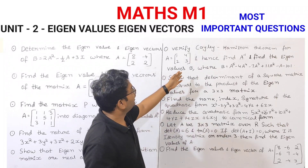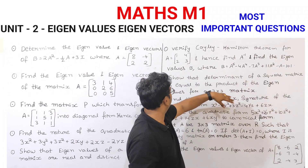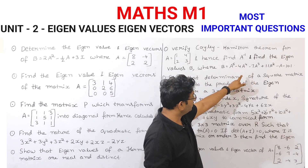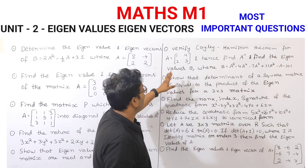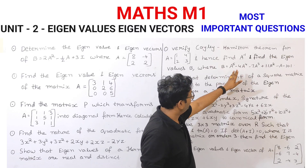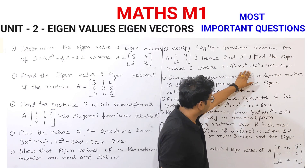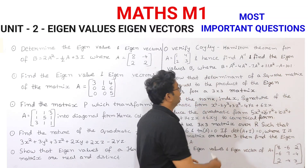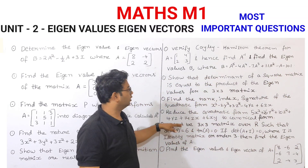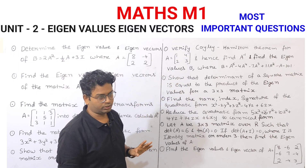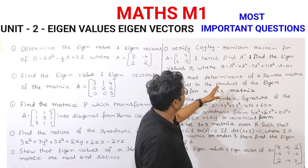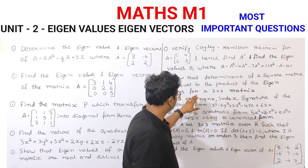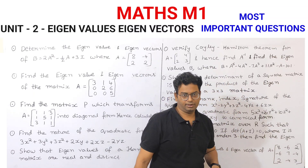Next, verify the Cayley-Hamilton theorem for A equal to the matrix [1,4; 2,3], and hence find A inverse and find the Eigen Values of B, where B is equal to A to the power of 5 minus 4A to the power of 4 minus 7A cubed plus 11A squared minus A minus 1. This one is very lengthy.